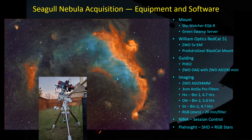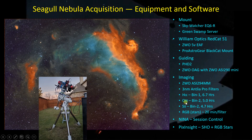Here's the equipment list and software list used in capturing this image. I'm using BIN 2 for Oxygen 3 and Sulfur 2, and BIN 1 mode for Hydrogen Alpha because that's where the detail is. I'll process that image separately, pull out the detail, and combine it via LRGB combination with all the data in BIN 1 mode, upscaled from the O3 and S2 filters. I'm also collecting about 20 minutes per filter on the RGB filters so I can replace the SHO stars with the RGB stars.